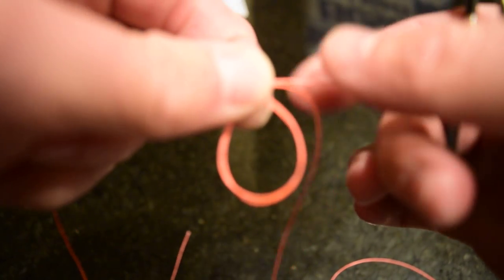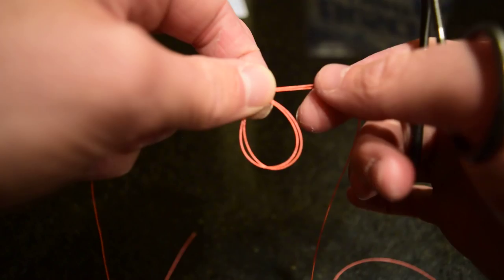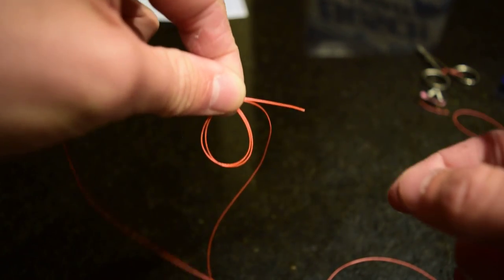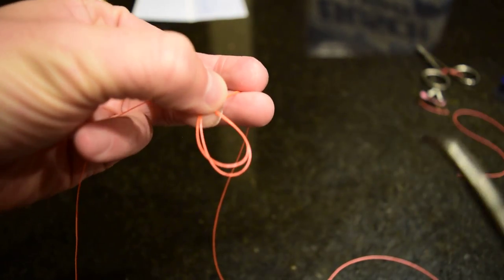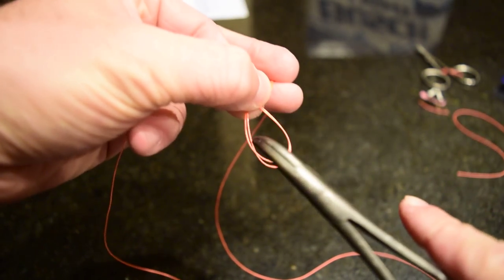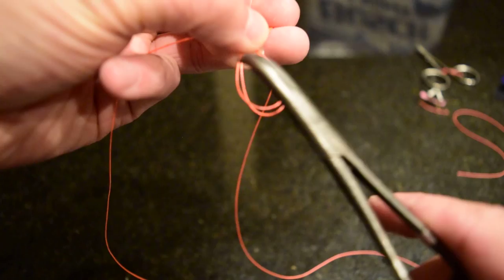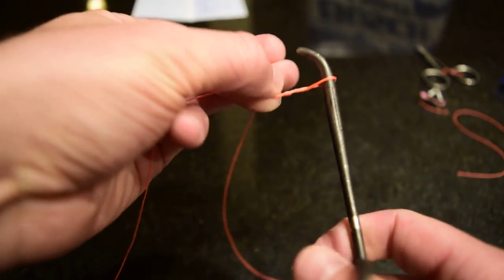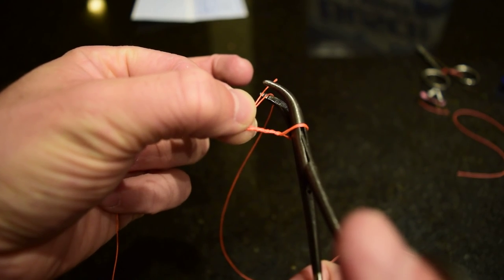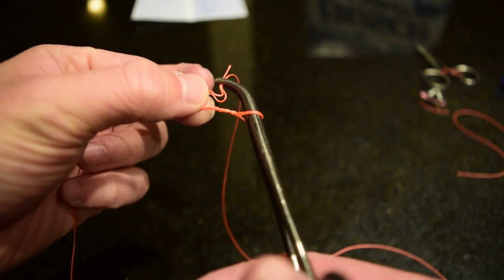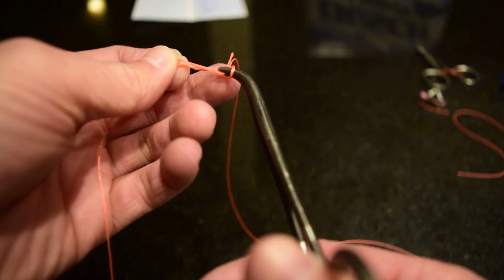I got my loop formed. I usually will hold this with my extra fingers. I'm going to stick my forceps through and go one, two, three. Catch both of those free ends—the main line and the tag—pull it through.